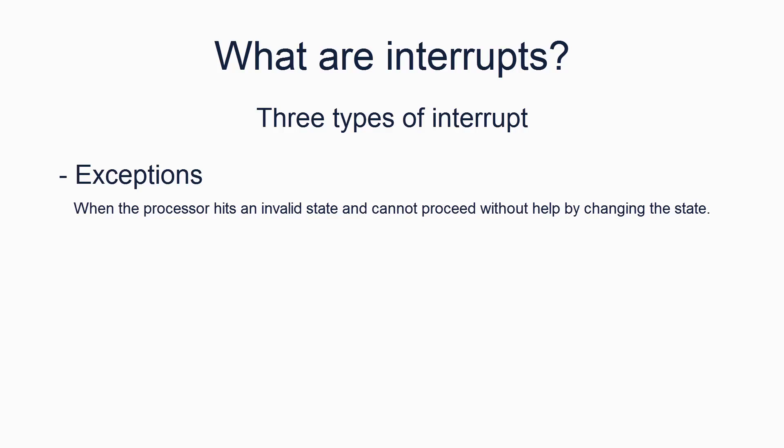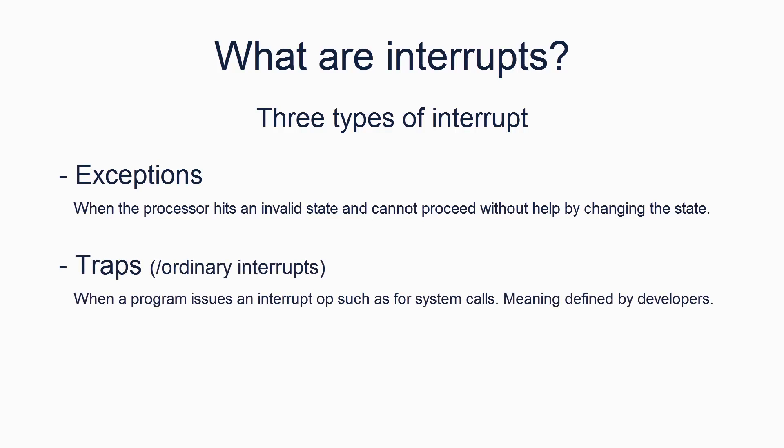For instance, a divide by zero exception is generated by the processor because it can't continue executing. An exception interrupt usually pushes information about the exception onto the stack. All exception interrupts are generated by the CPU. The second type is traps. These can also be known as interrupts, interrupt traps, or trap gates. In all respects they are the same as exceptions, apart from the fact that traps may not leave any information on the stack. In a sense, exceptions are a subset of traps.